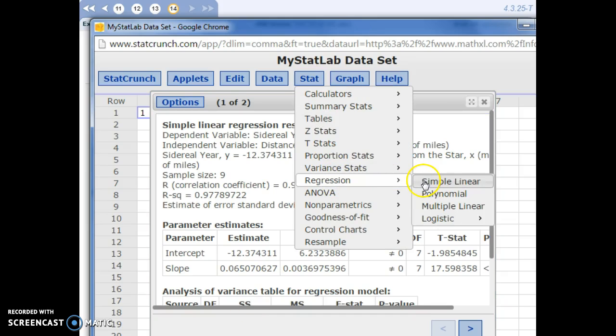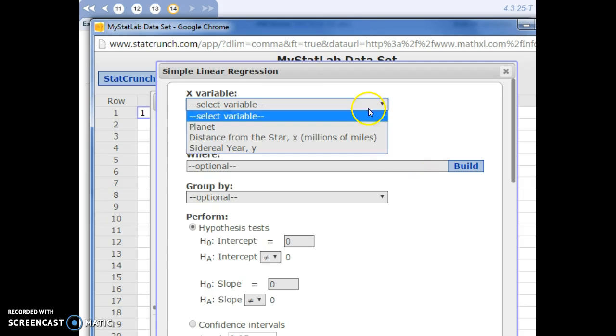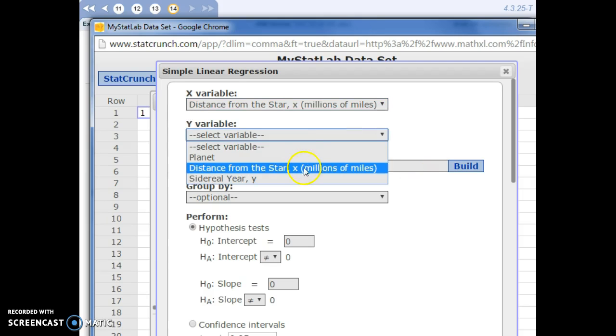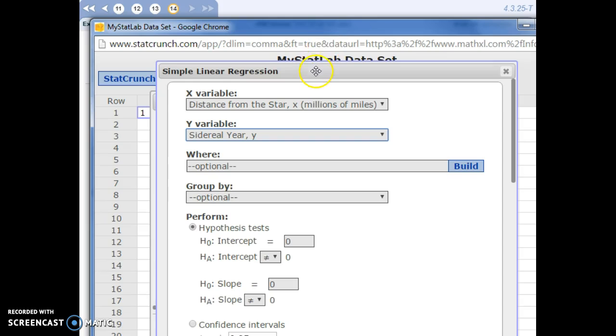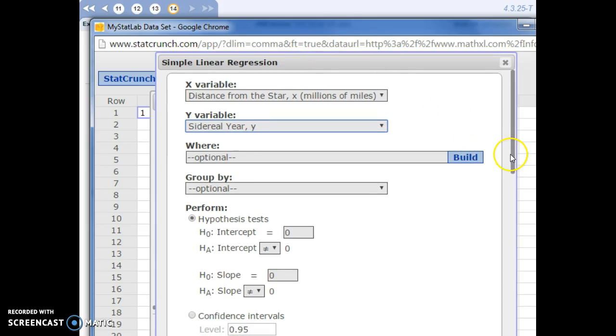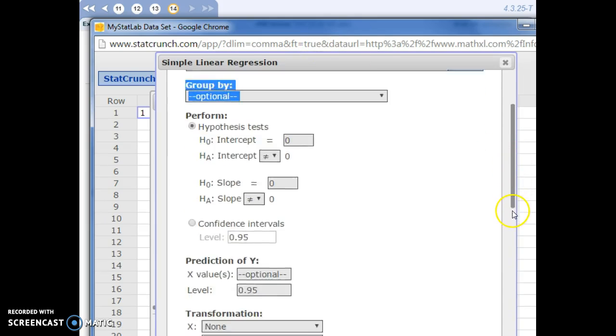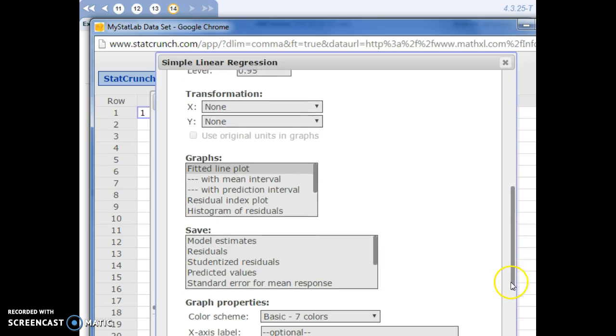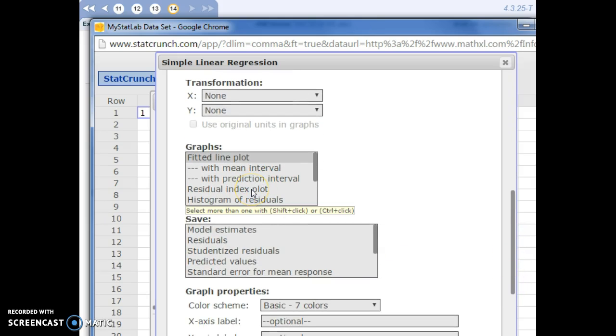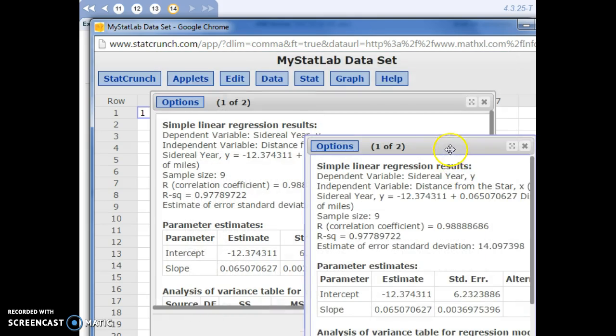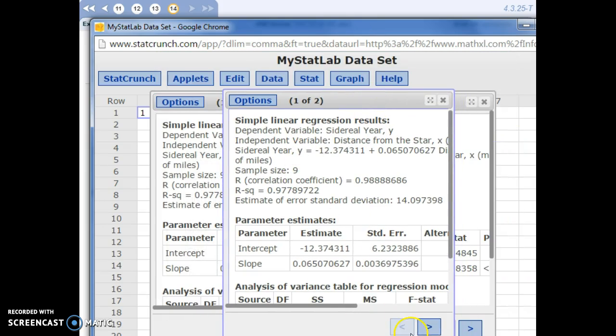Stat, regression, simple linear. So, start off the same way here. What we want to do is choose the option. If you scroll down. We want the residual index plot. So, hit compute on that. We get a lot of the same information, but our graph this time will show the residual.